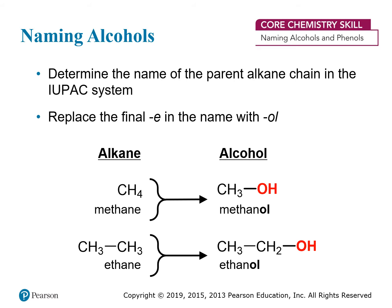Naming alcohols is pretty simple. You just determine the name of the parent alkane chain that the OH group is attached to, and then you replace the E at the end of that name with OL to indicate an alcohol group. So for instance, methane CH4 becomes methanol when you add an OH group to replace one of those hydrogens. For ethane, you have two carbons in a chain, and that becomes ethanol when you replace one of the hydrogens with an OH group.